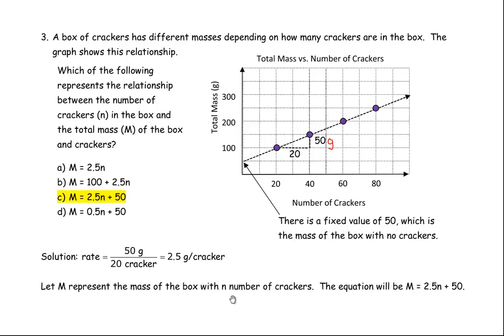So if M represents the mass of the box with N crackers in it, then the equation would be the mass is 2.5 times the number of crackers plus 50. So for example, just to show you that is correct for the equation.